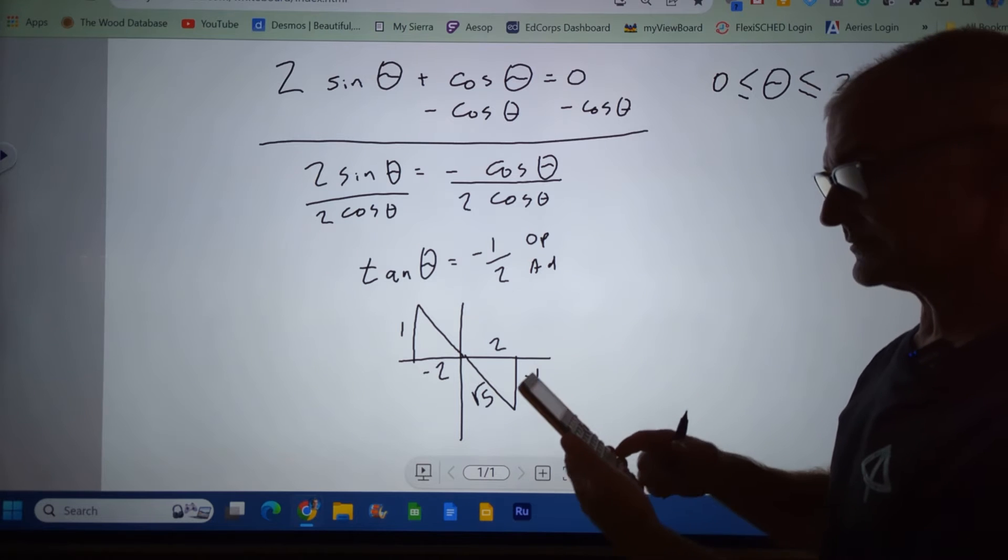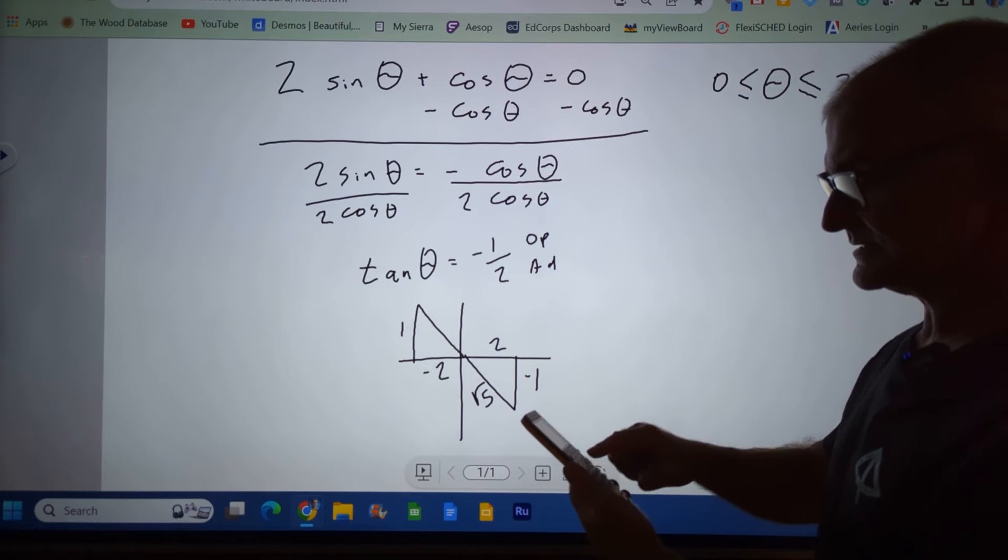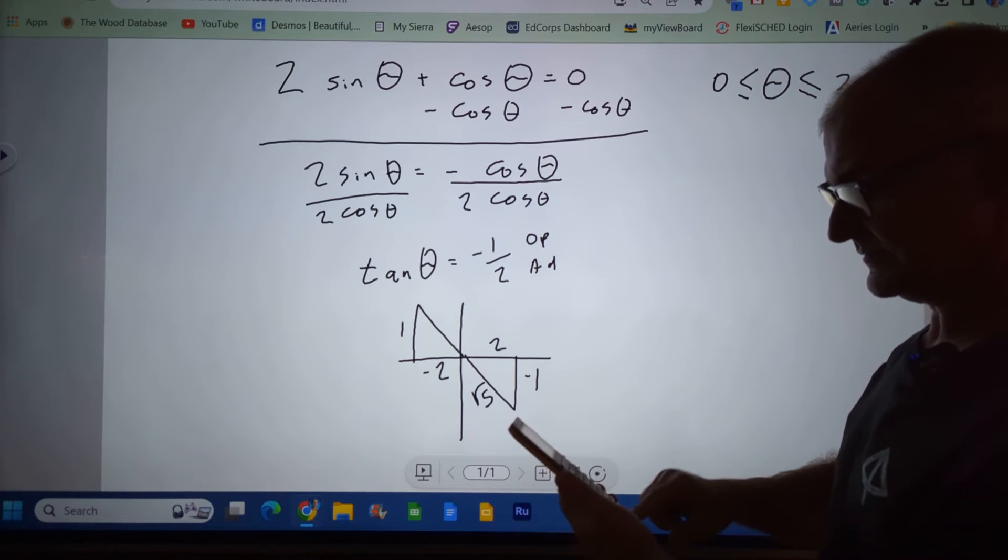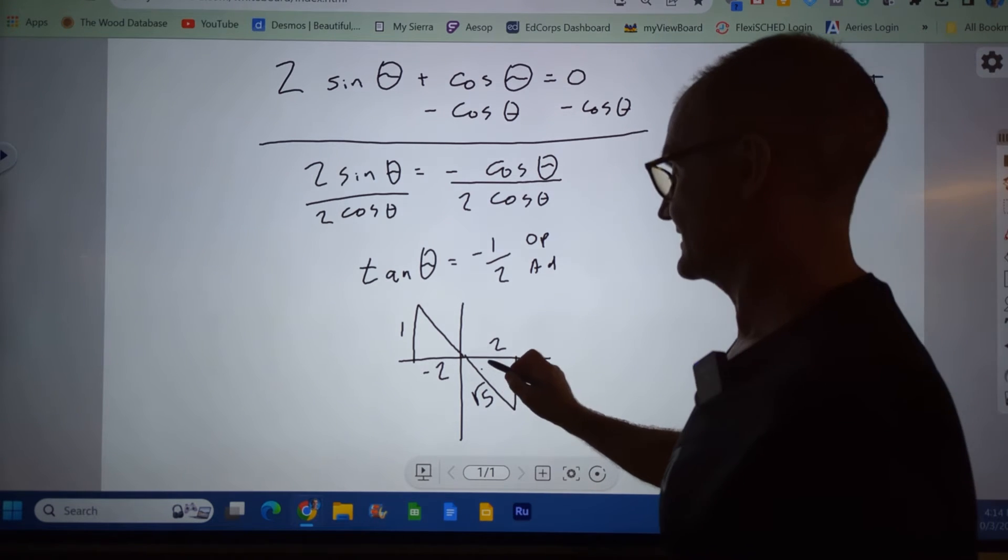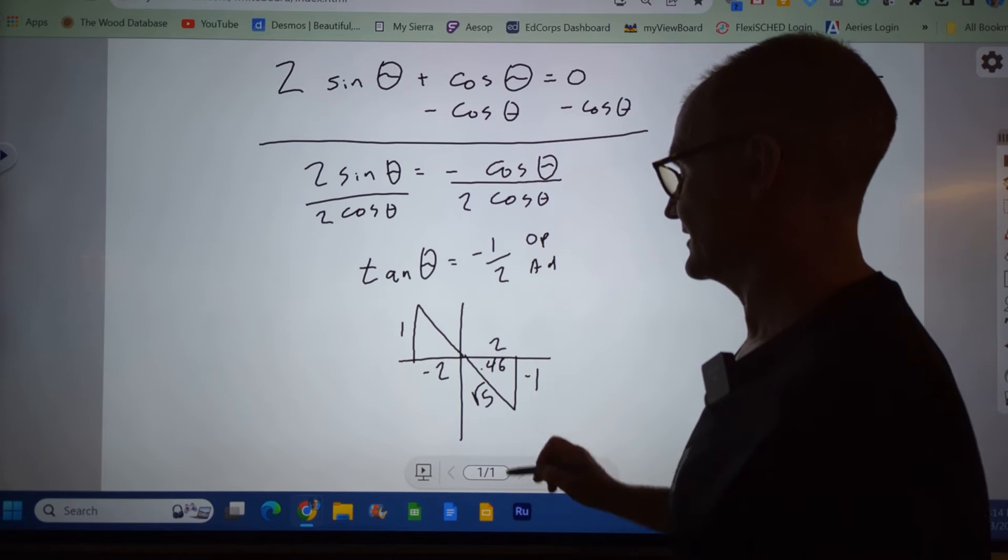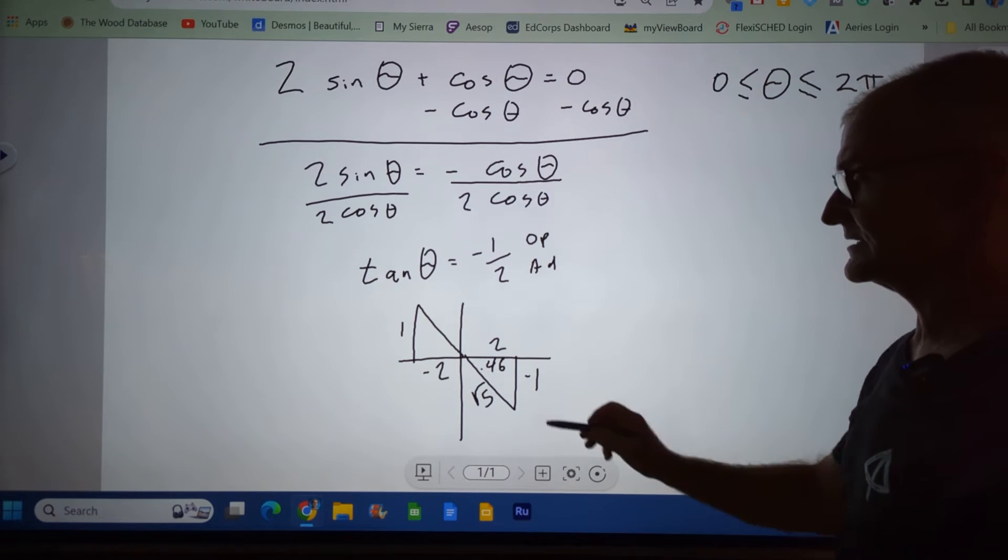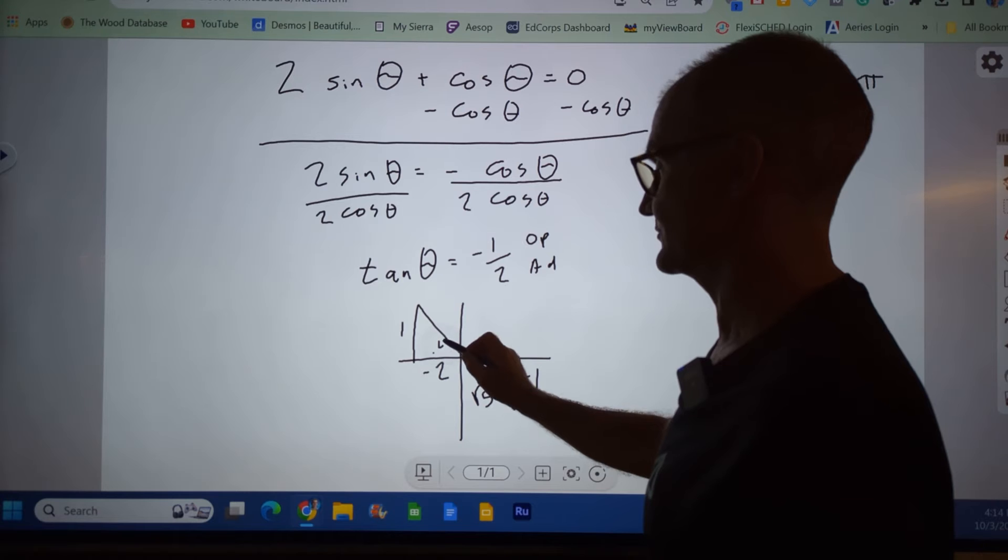In radian mode on my calculator, I'm going to go second tangent of negative 1 half and I get negative 0.46. That's radian, so this is a reference of 0.46. So this is also a reference of 0.46.